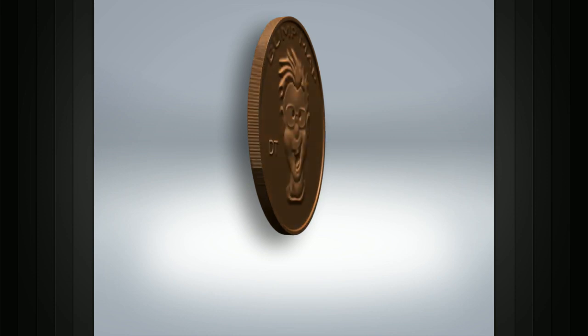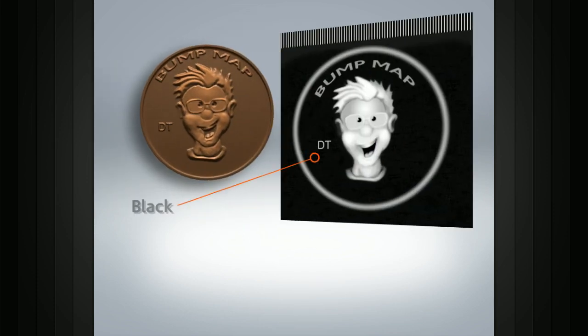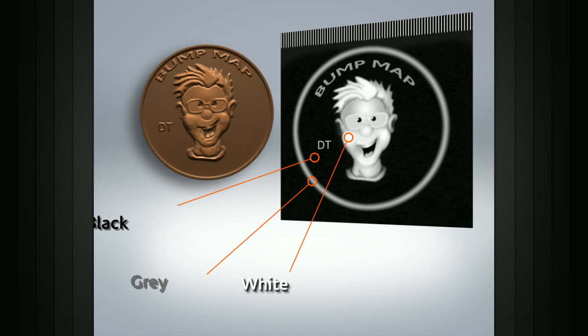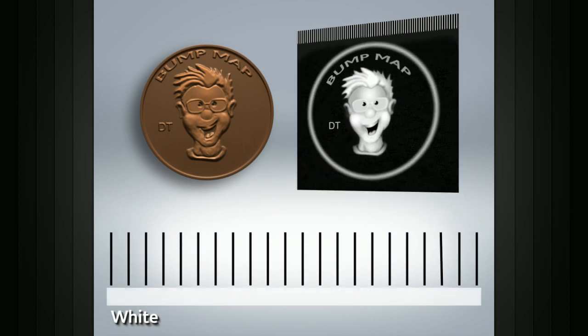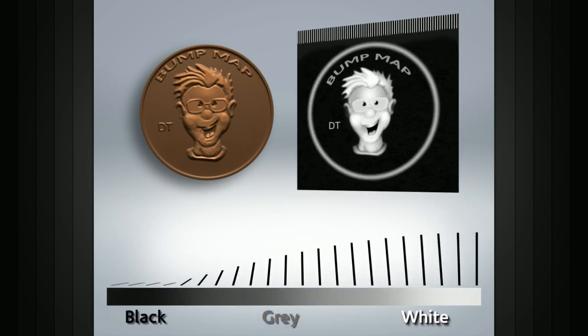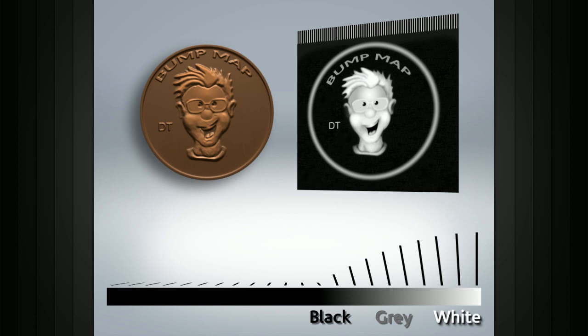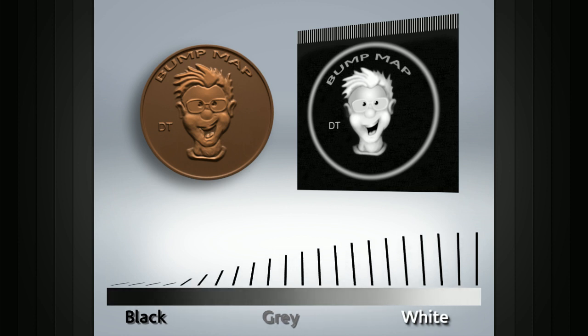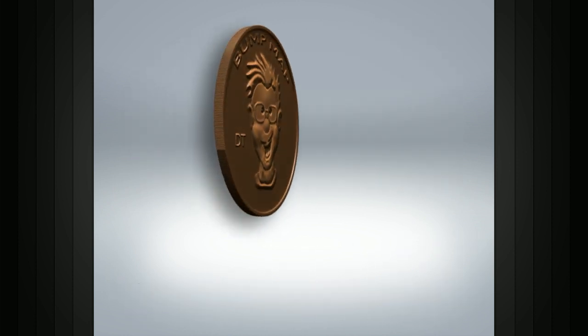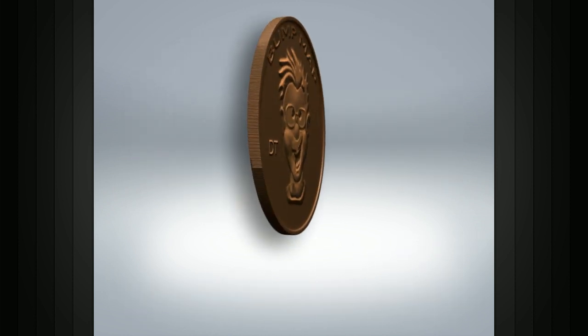This detail is created by reading the black, white, and grayscale data stored in the bump map and altering the surface normals of the object which is being rendered. By adjusting the surface normals, we change the way the renderer and lights see the object's surface.